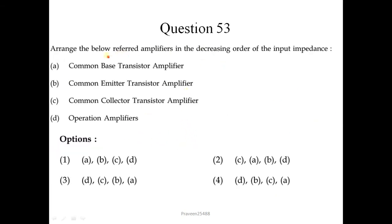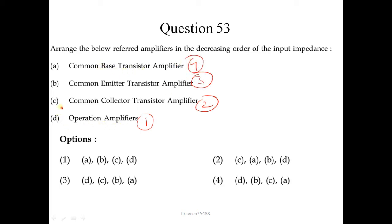Question number 53. Arrange the below-mentioned amplifiers in decreasing order of input impedance. First comes the FET amplifier, then common collector transistor amplifier, then common emitter, and then common base transistor amplifier. So the correct sequence is D, C, B, A — the third option is the correct answer.